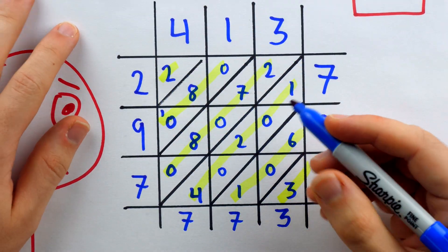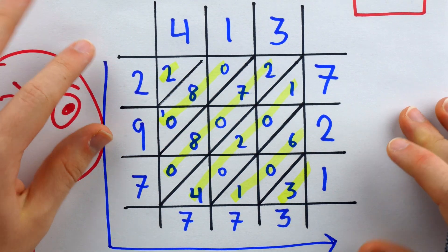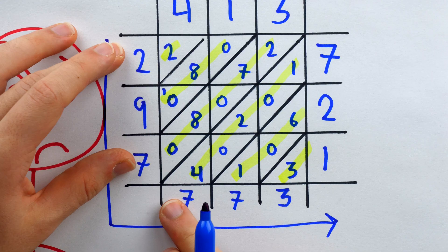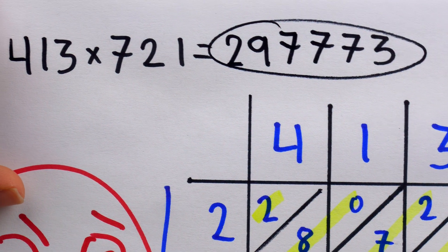And the answer to the multiplication is read from top left to bottom right. 297,773. And so there's the answer to our original multiplication problem.